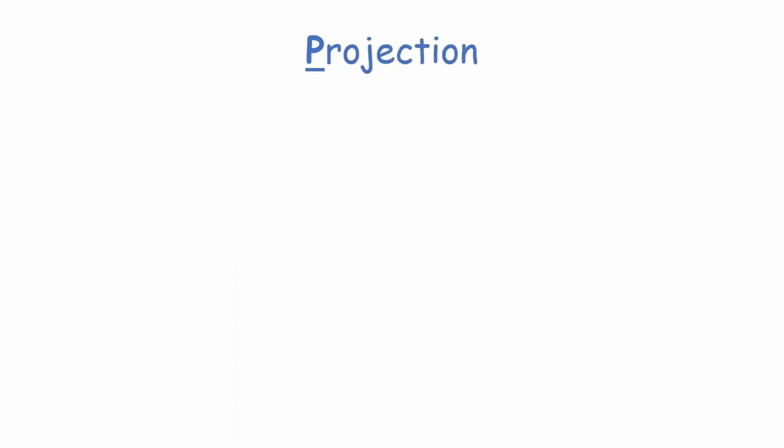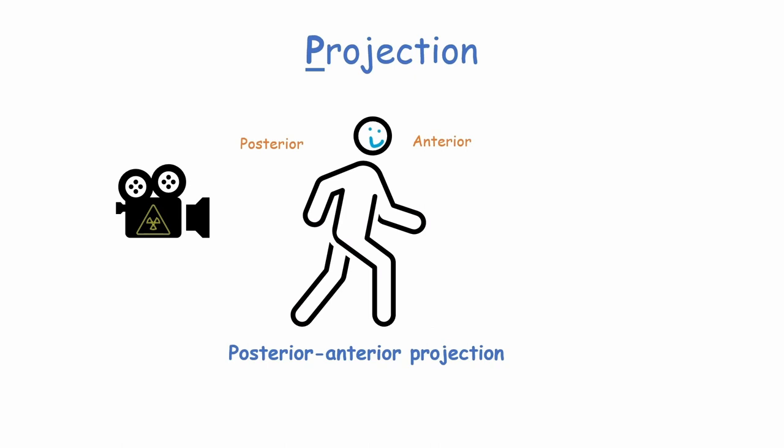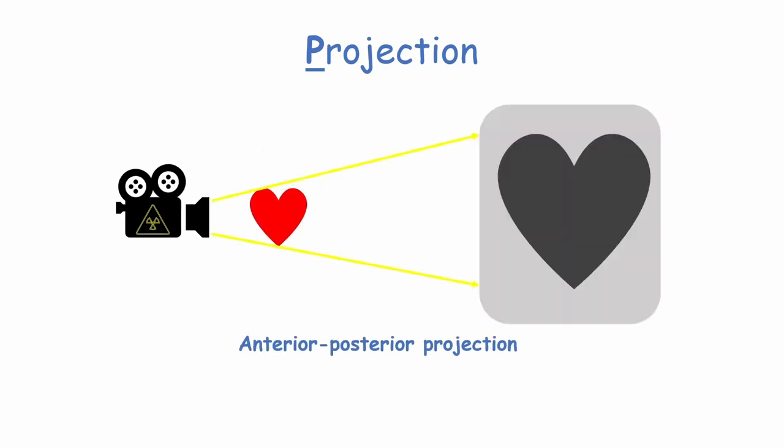Projection refers to whether the patient is facing the X-ray source or has their back facing it — described as anterior-posterior or posterior-anterior. Ideally, a chest X-ray should always be PA, posterior-anterior. This is important as AP films can make the heart appear enlarged.